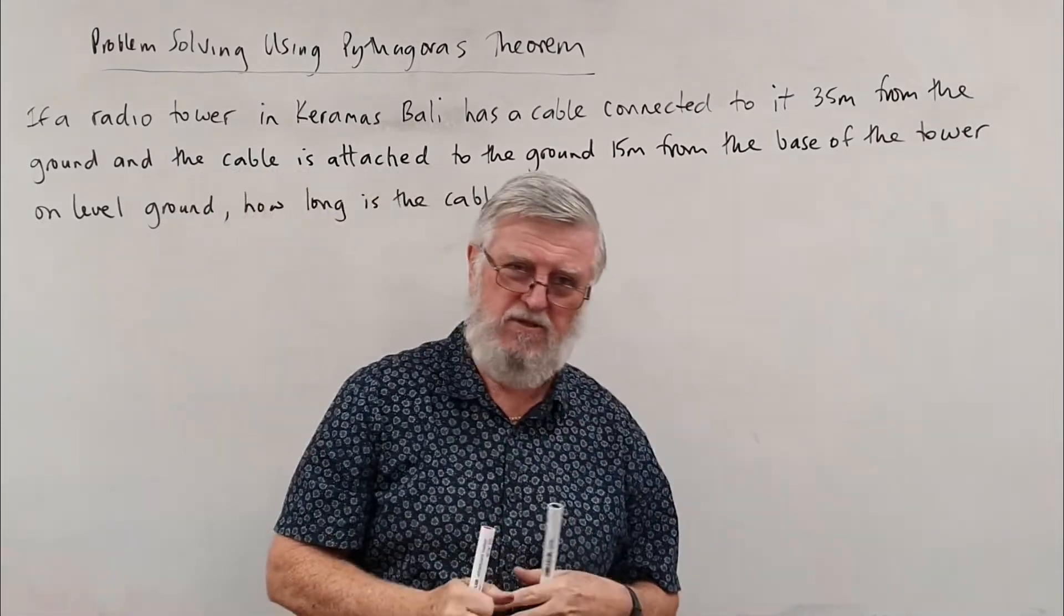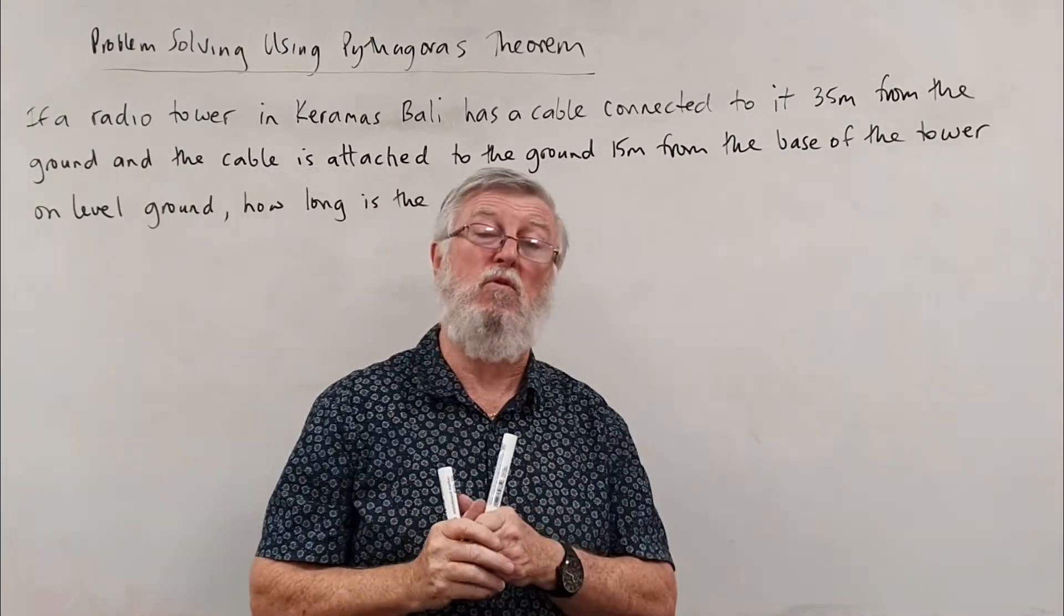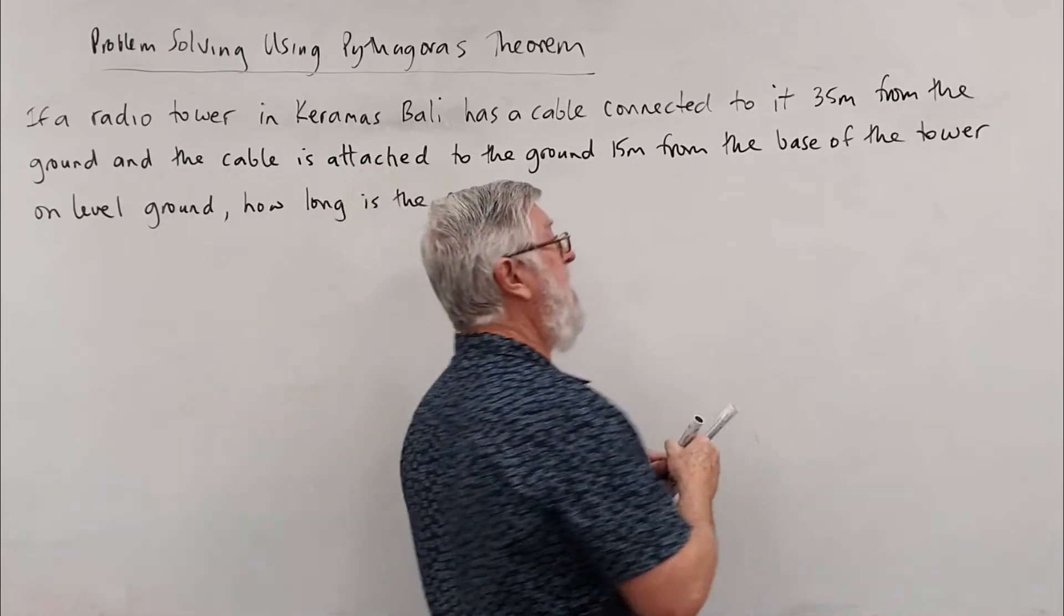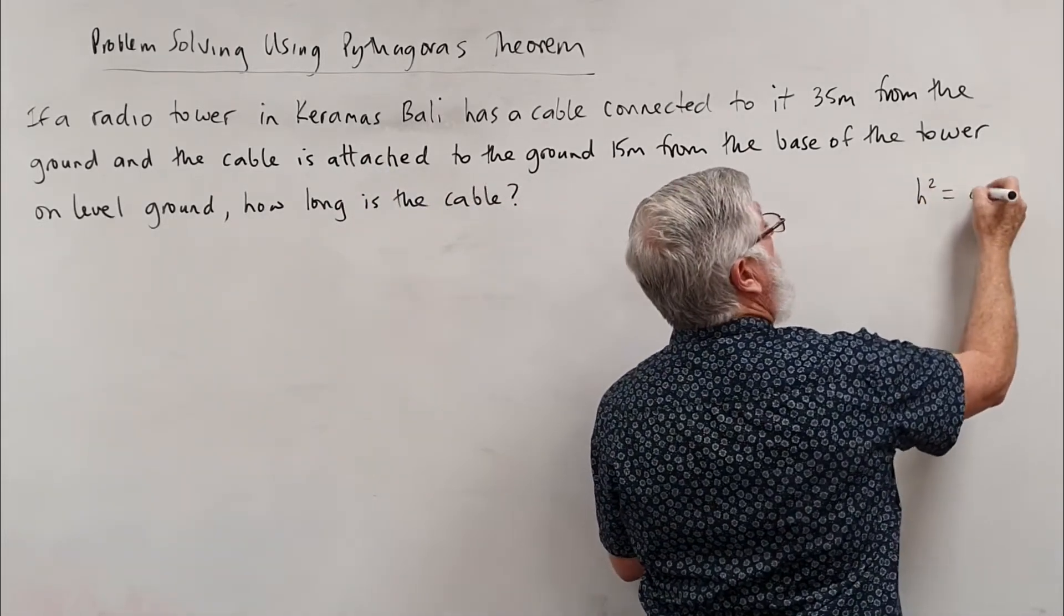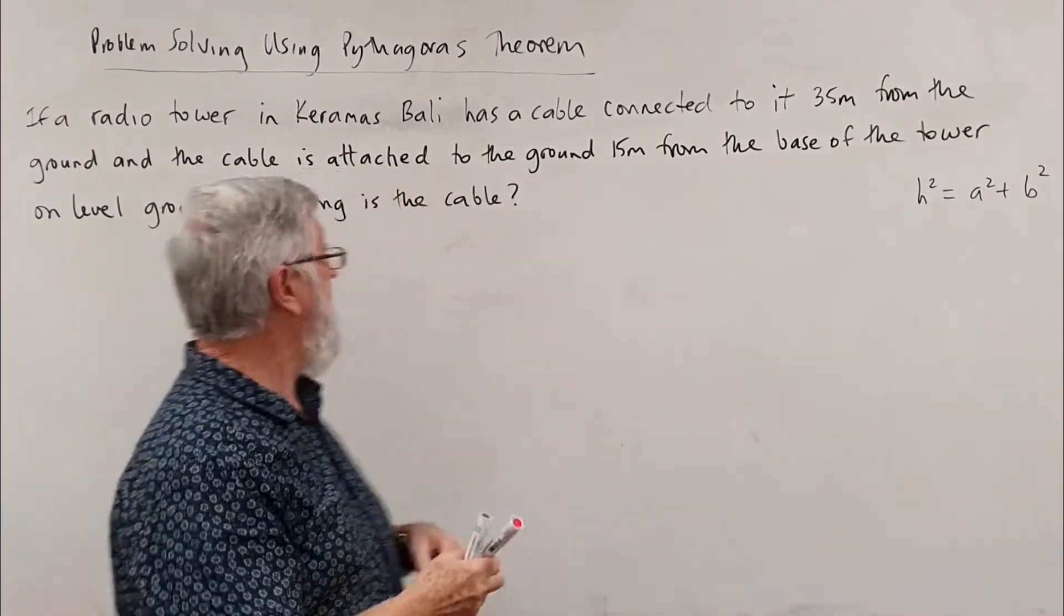When you walk into a test you get a lot of questions that have different concepts and each of them will form a right angle triangle. From that right angle triangle you'll use h² = a² + b² to figure out the length of what's going on. Here's an interesting one.